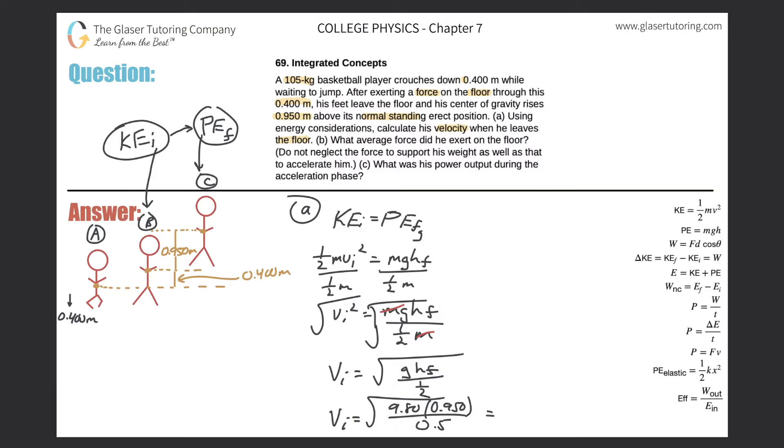And then that's all divided by one half or 0.5. So throw it into the calculator: square root of 9.8 times 0.95 divided by 0.5. So we get 4.32 meters per second. That's the answer to letter A. All right, let's move on to letter B.